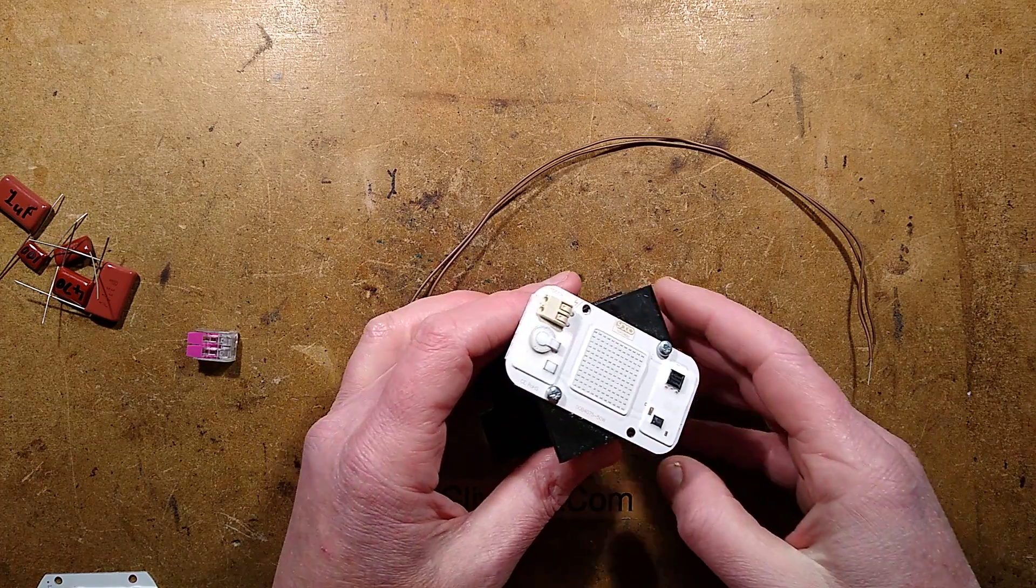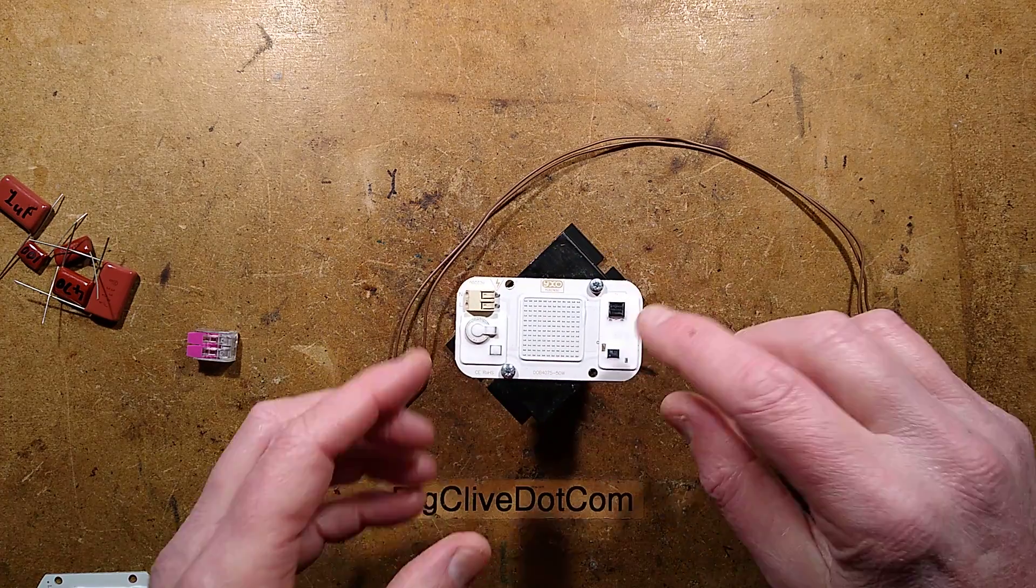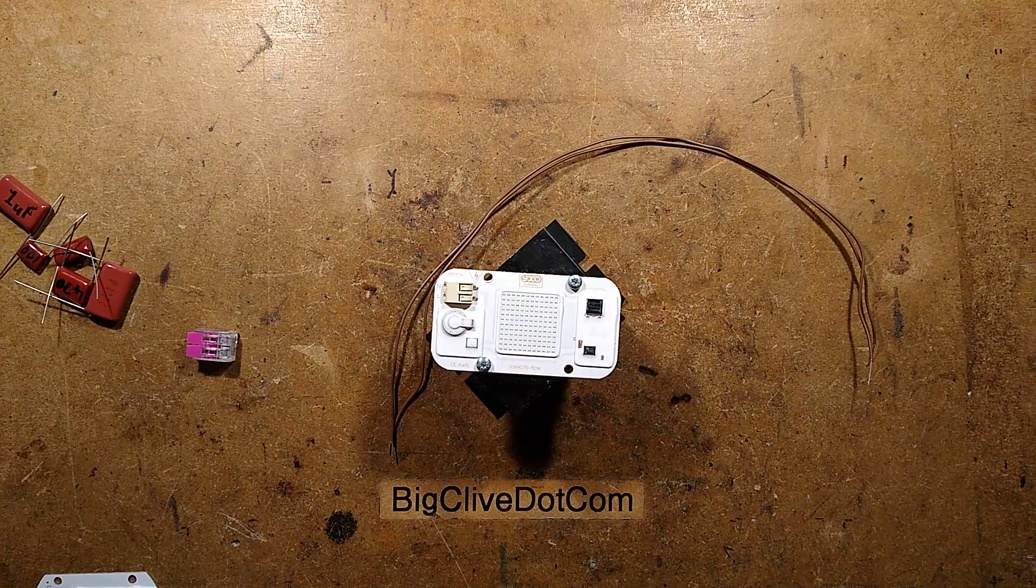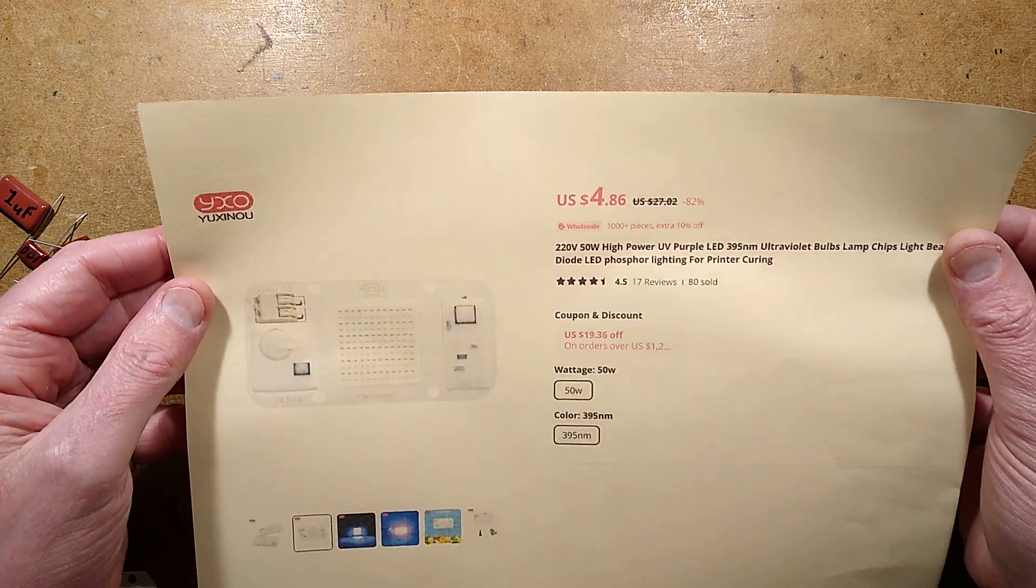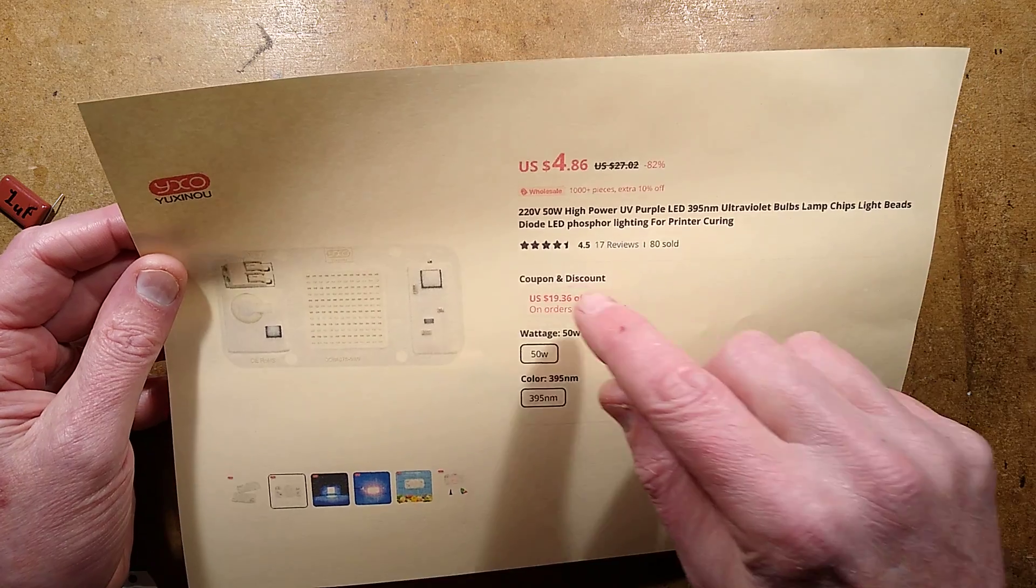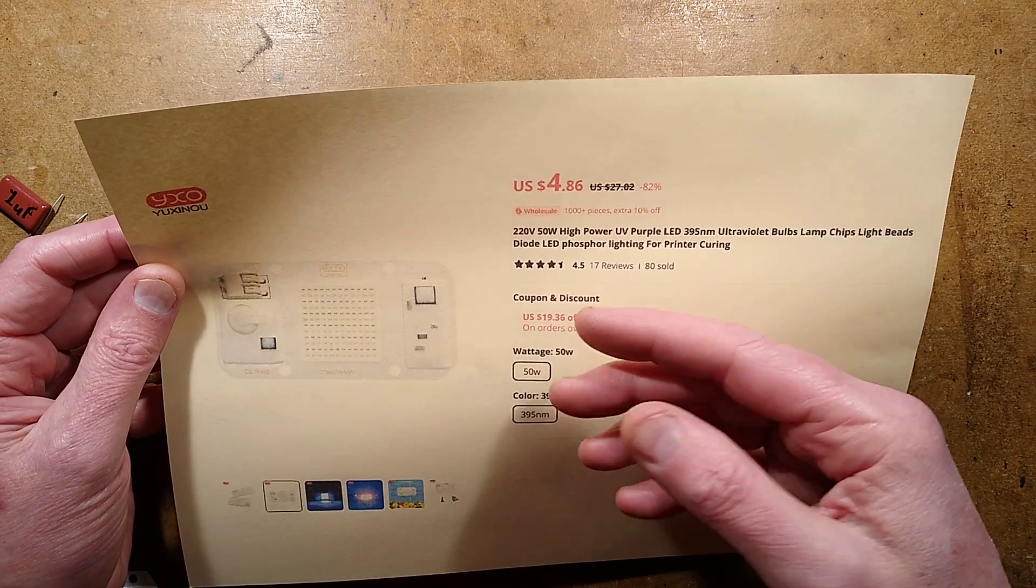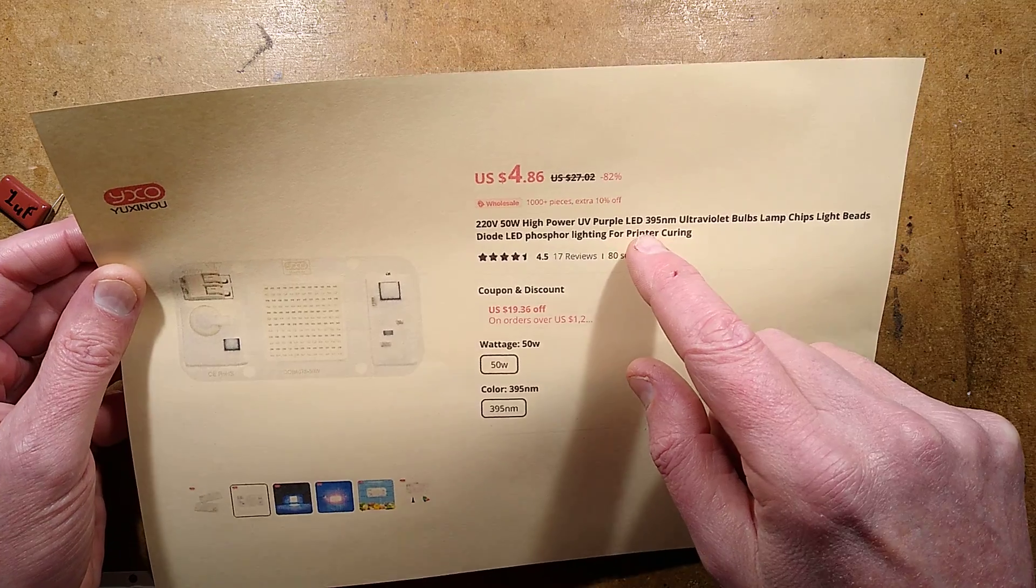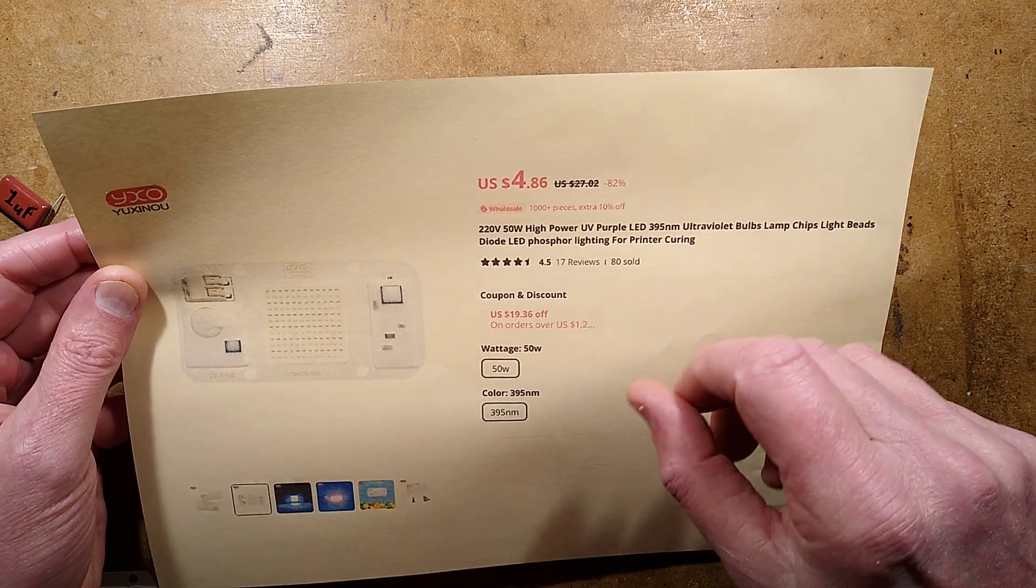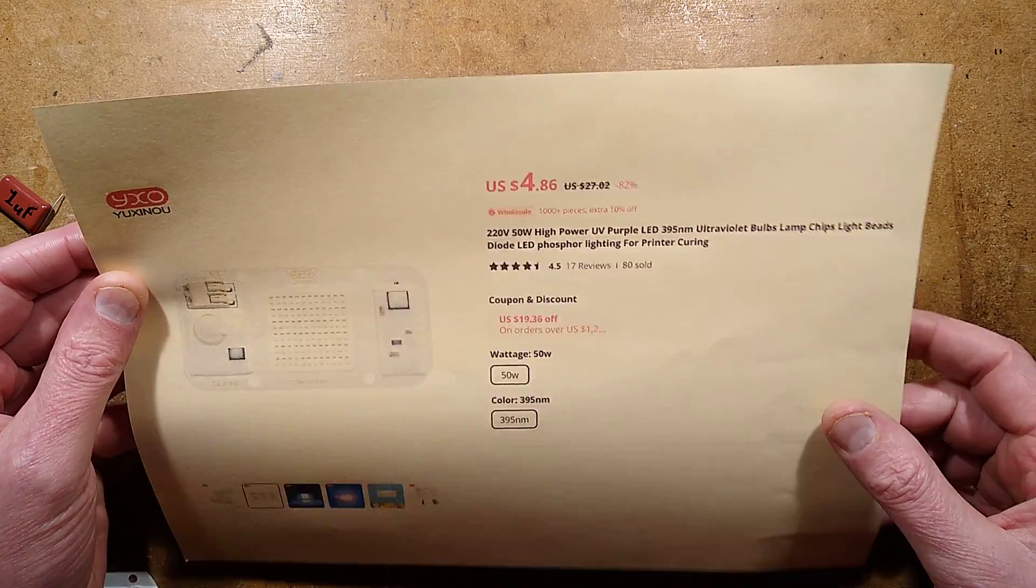I have a purple LED and let's do lots of experiments with it. This came from Aliexpress, branded YXO Yuxin. It's 220 volt 50 watt, probably available on lower voltages as well. High power UV purple LED, 395 nanometer, for printer curing and 3D resin curing.